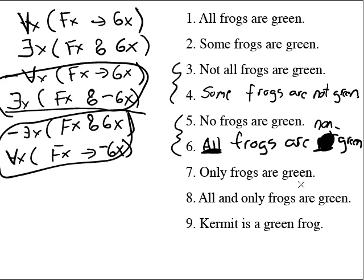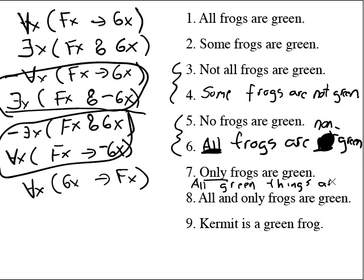We're up to sentence seven. Number seven says only frogs are green. Is only frogs are green a universal, an existential, or a singular? It is a universal sentence. Universals have universal quantifiers with arrows. But what's the relationship between only and all? Only is a reversed all. So what we're going to get here is actually gx arrow fx. What only frogs are green really means is that all green things are frogs. All green things are frogs.